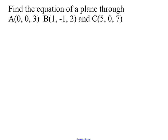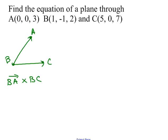First we're going to find the equation of a plane through three points. I'll label them A, B, and C. What I want to do is find two vectors in my plane, tail to tail, and cross them — because that gives me a vector normal to the plane containing those three points. You can choose any two vectors to cross, but they both need to start at the same point.